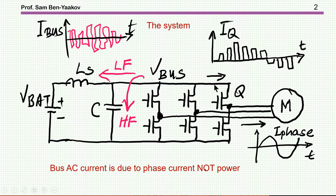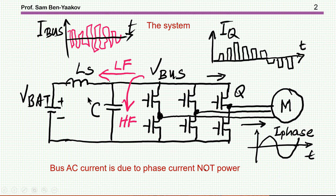There is a current flowing here. All these transistors are toggling — this one, another one, and another one. Overall, we're going to have a lot of AC components, and we want to capture them with this capacitor bank. The portion of high-frequency AC that will flow through the battery cable is really small, as we'll see later on.